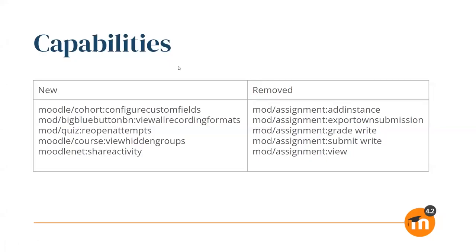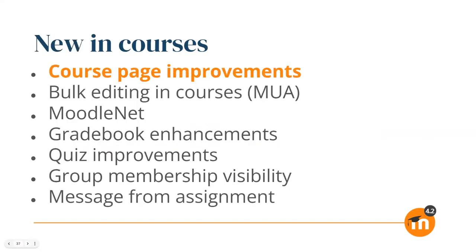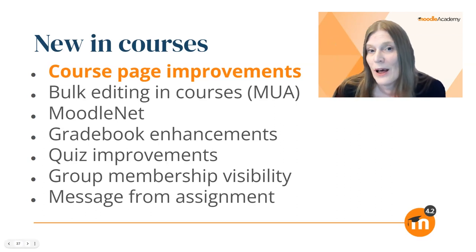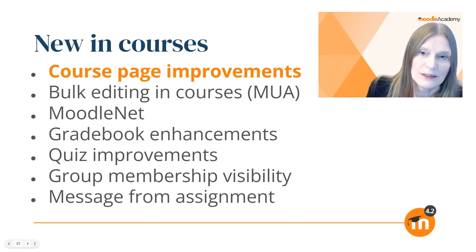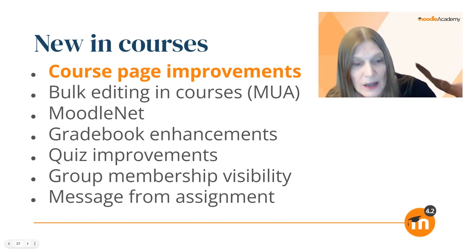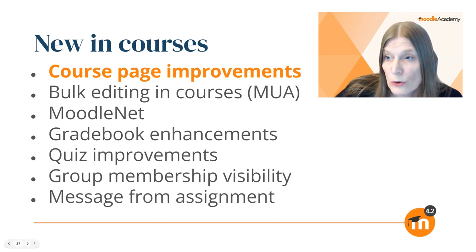If PDF fonts are enabled, you have a new course setting to select the PDF font to be used for downloaded PDF files in the course. In 4.2, as usual with a new version, we have a lot of new capabilities. These new ones include the BigBlueButton recording format feature and a couple of new features still to cover. The removed capabilities all relate to the old Assignment 2.2. That's all for what's new in site administration — unless there's anything urgent, we'll move on to what's new in courses.